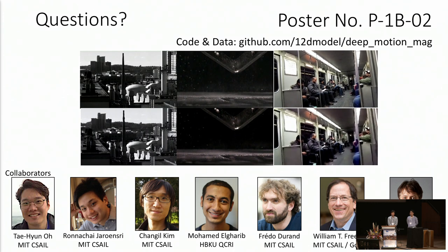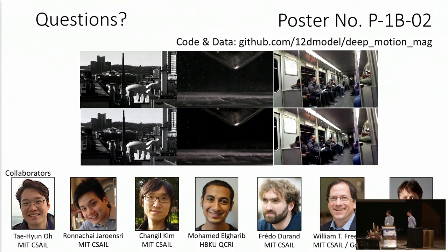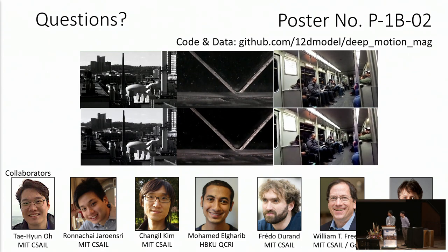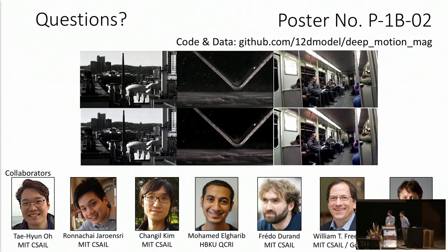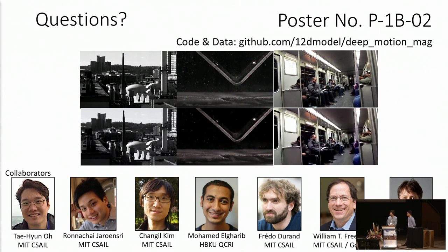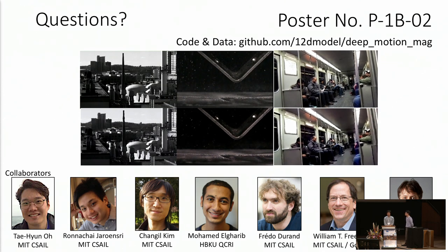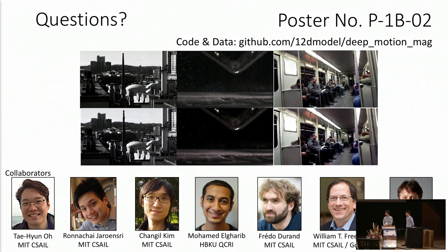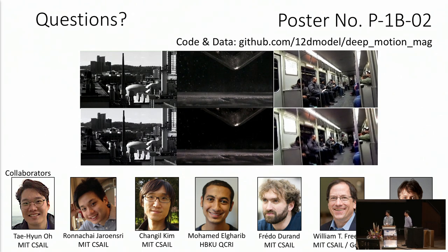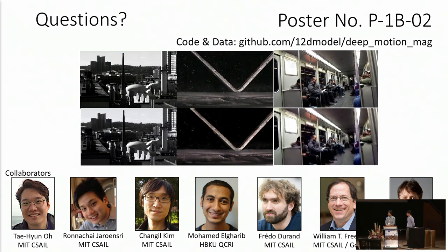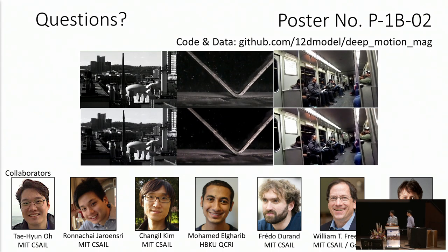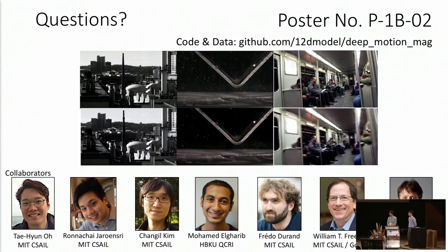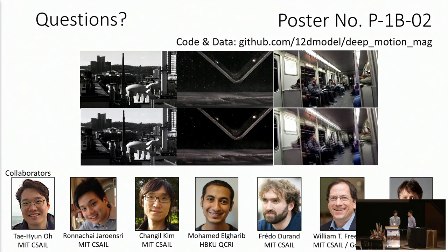Question: Since you are learning end-to-end as a full pipeline, do you think you can invert the process and do motion stabilization instead of magnification? Answer: Certainly. In a small experiment, we tried using a negative magnification factor and were able to do some frame interpolation. The limitation is that since our dataset is designed around magnifying motion, if the input motion is too large we might not capture it as well, and there is also the receptive field size as a parameter.